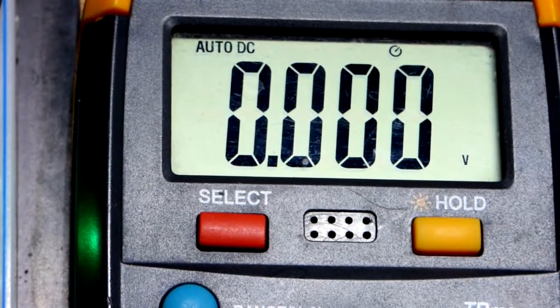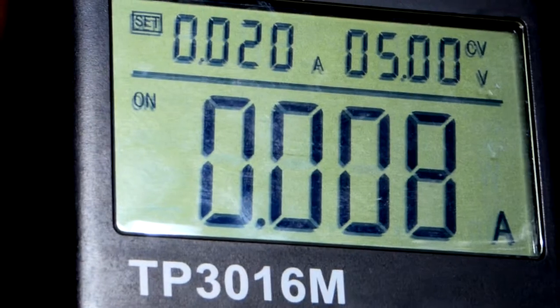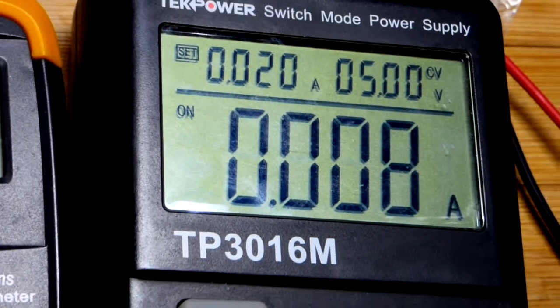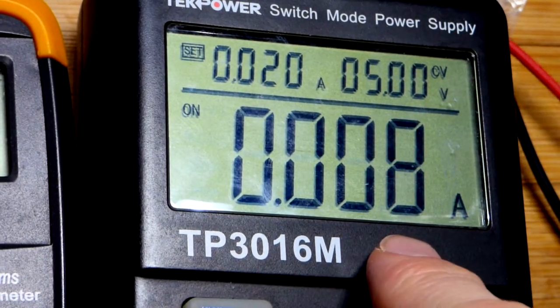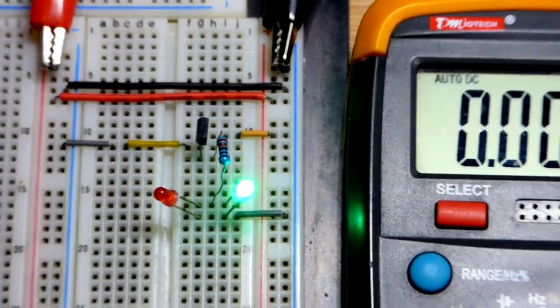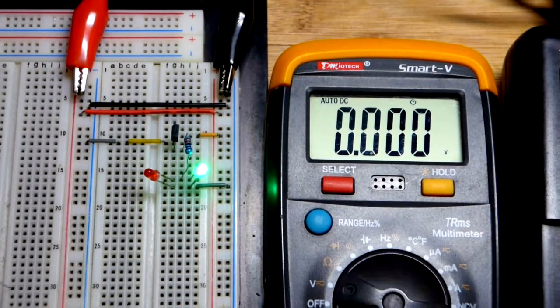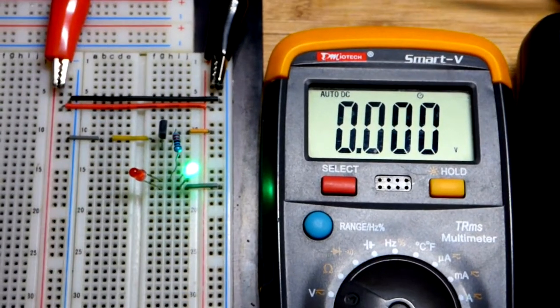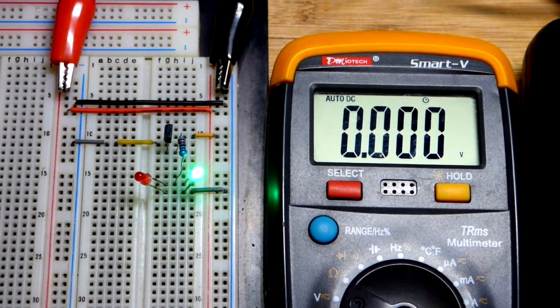Now we're going to measure voltages with the multimeter. I have the power supply set to 5 volts as you can see there, and about 8 milliamps of current is going through the circuit right now through the LED, the transistor, and whatnot.